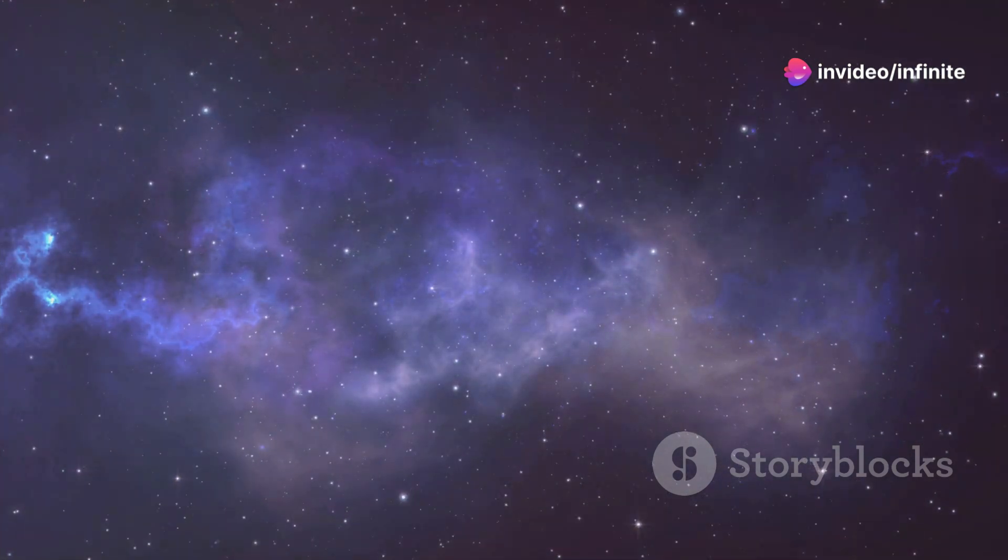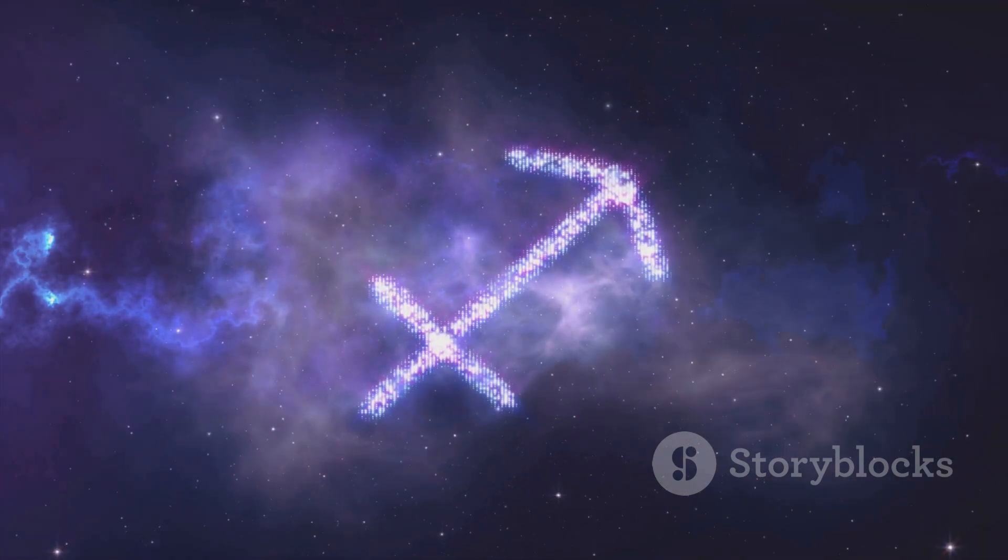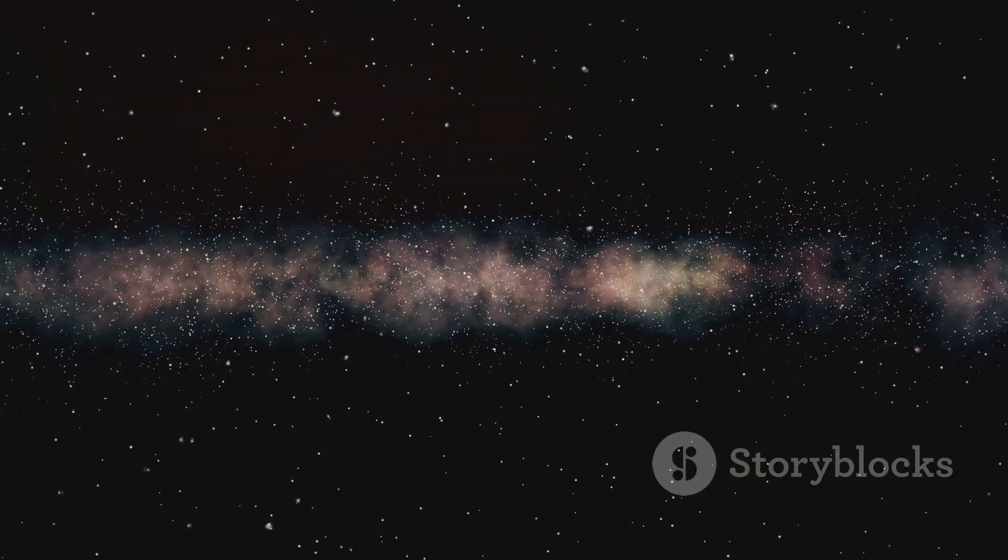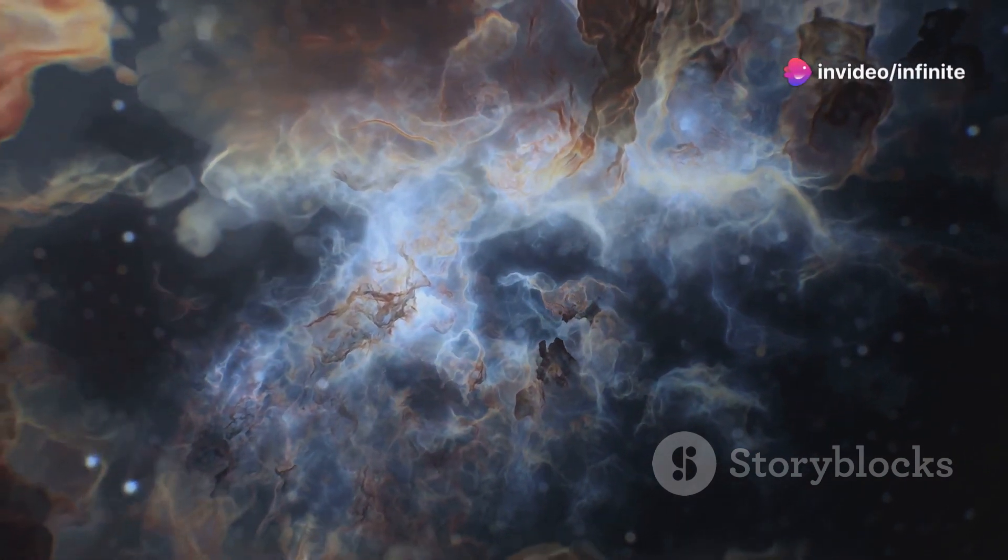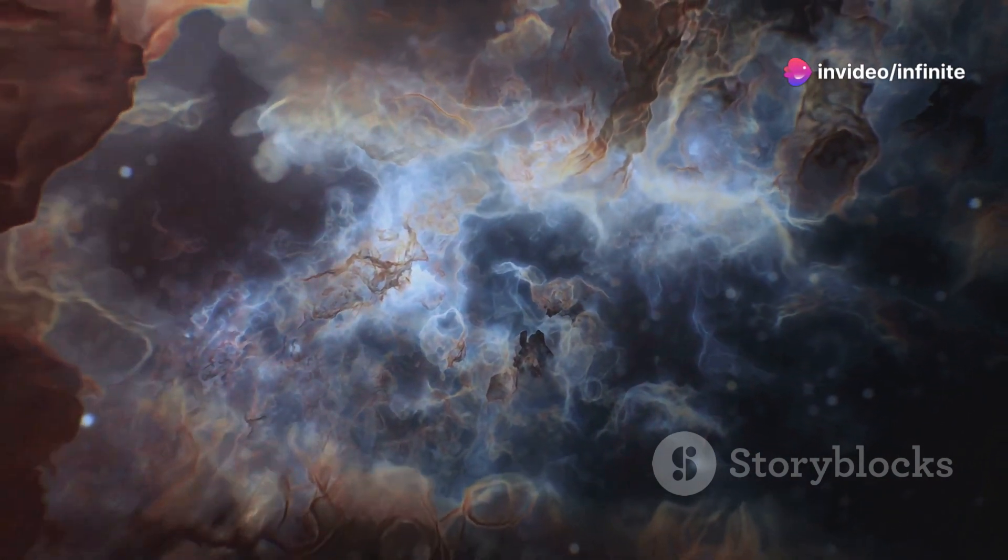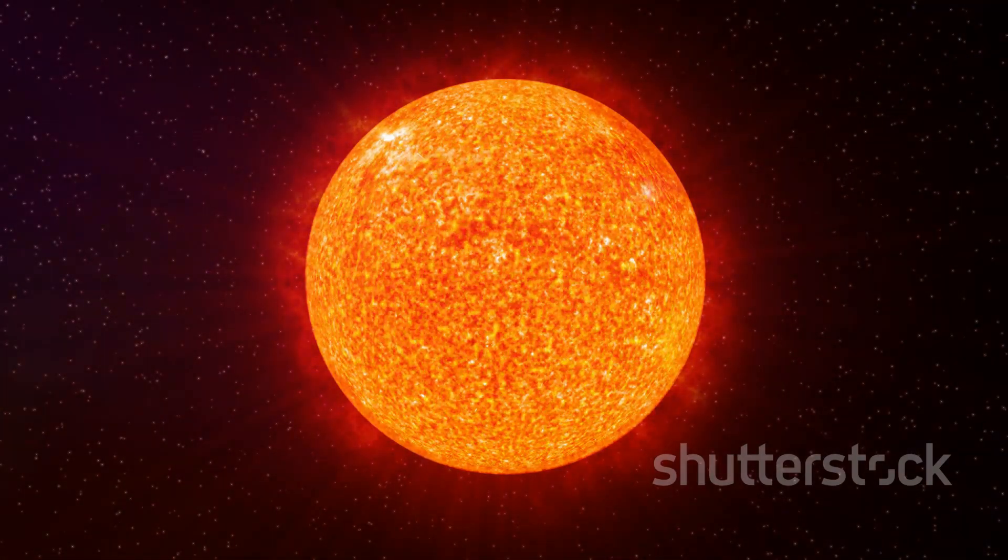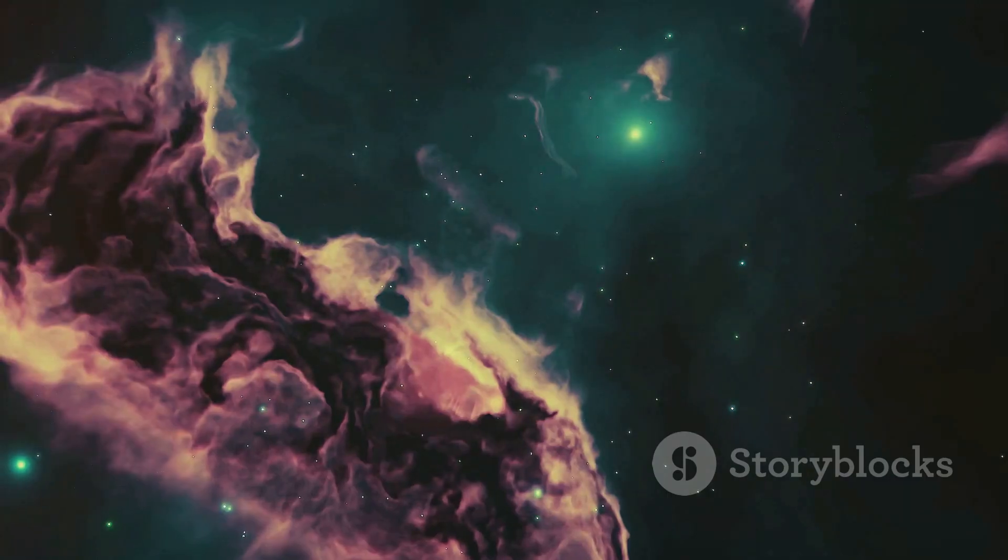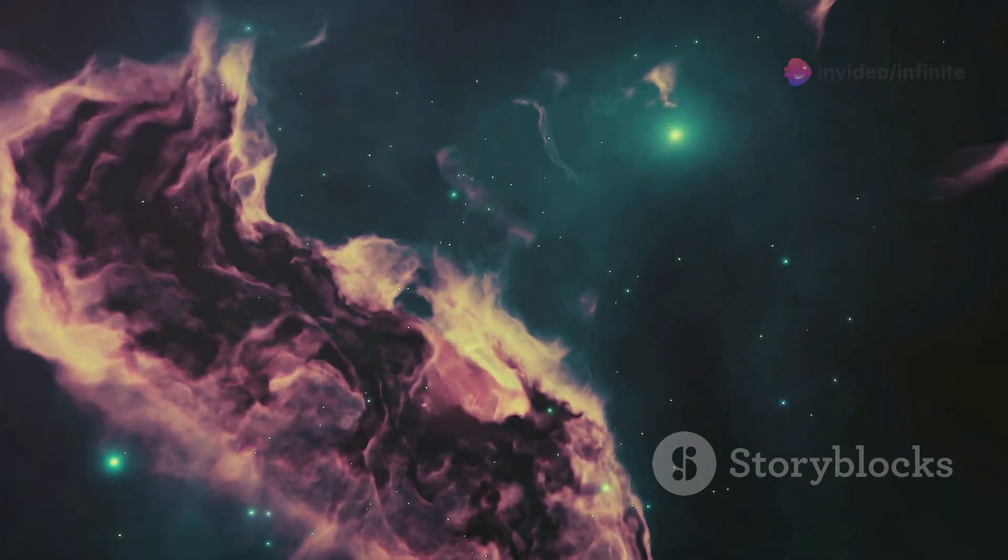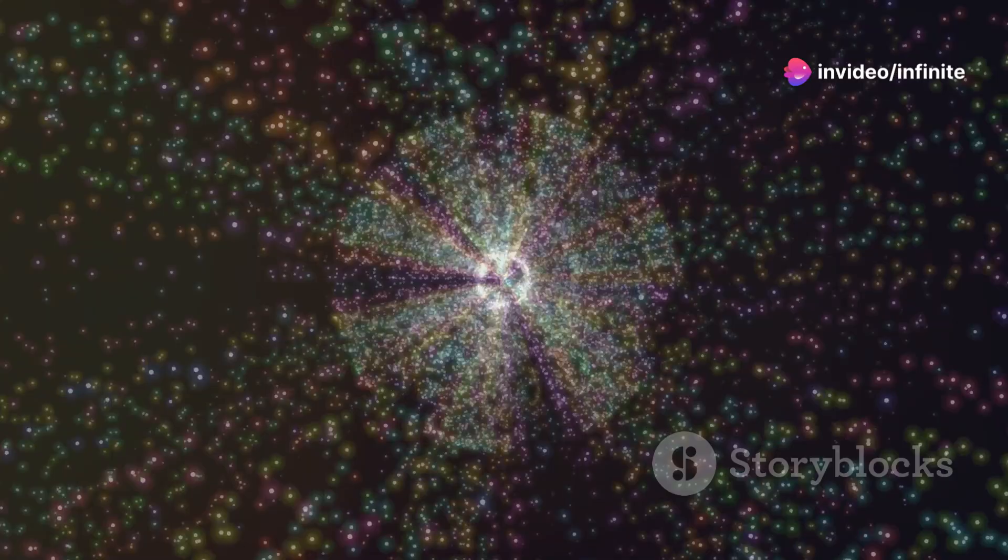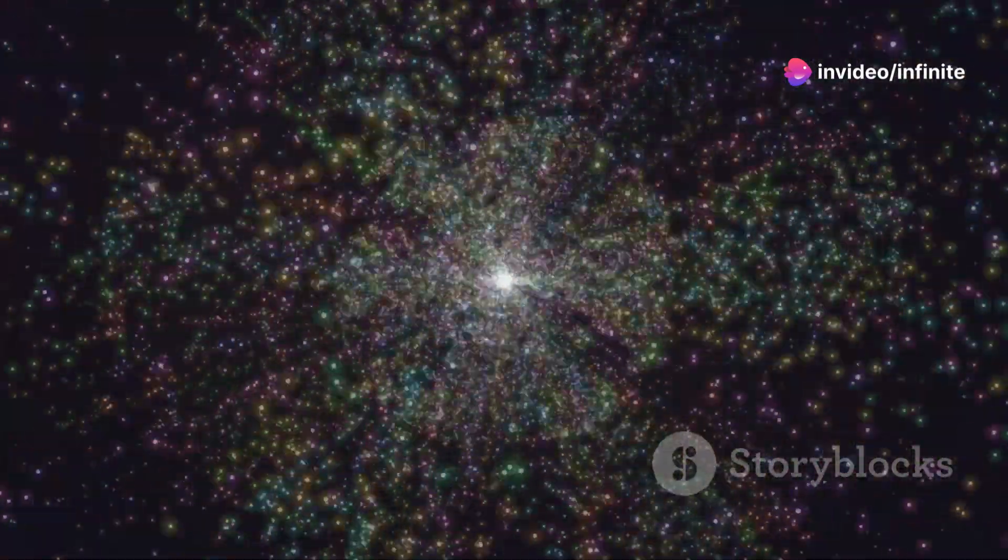Ancient stars, often referred to as Population 2 stars, formed when the universe was still young. They have a lower metallicity compared to younger stars. This means they contain fewer heavy elements, reflecting the composition of the gas clouds from which they formed. Younger stars, like our Sun, belong to Population 1. They formed from gas clouds that had been enriched by the supernova explosions of previous generations of stars. As a result, they have a higher metallicity, containing a greater abundance of heavy elements.